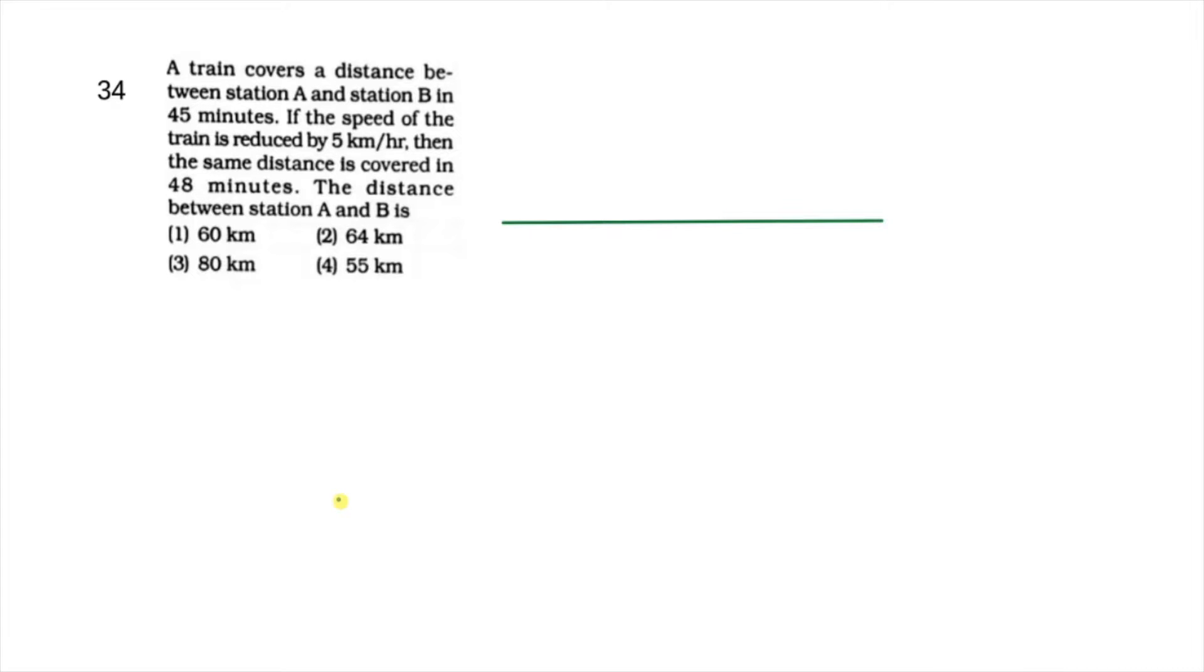In this question, it is saying that a train covers a distance between station A and station B in 45 minutes. If the speed of the train is reduced by 5 km per hour, then the same distance is covered in 48 minutes.